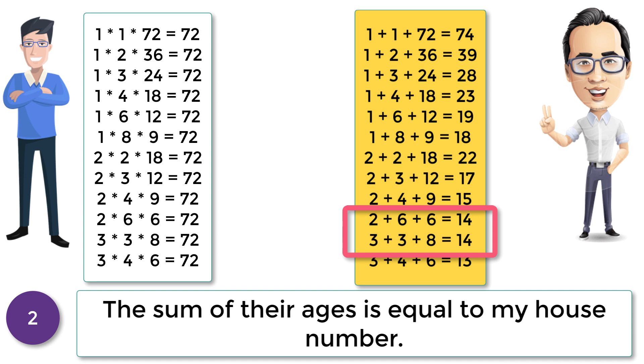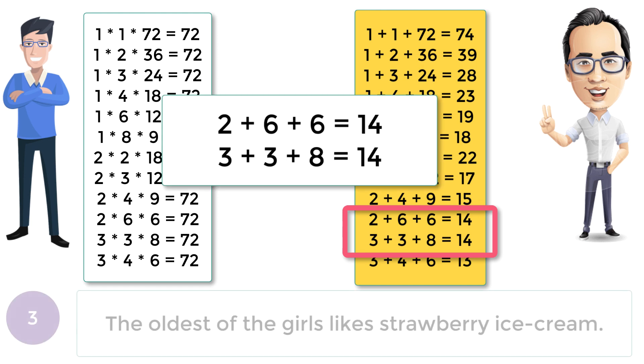So we have two possible combinations to get sum 14: that is 2 + 6 + 6 = 14, and 3 + 3 + 8 = 14. Since there are two possibilities, it is difficult to guess the ages of three daughters here also.